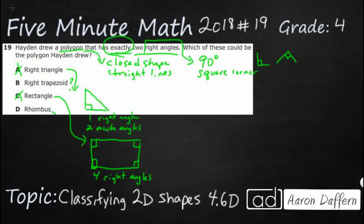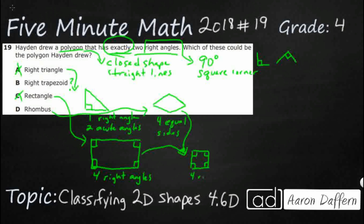Let's check our rhombus. Sometimes we'll call a rhombus a diamond, but that's not really a name. Think of the pattern blocks — you actually have two rhombuses in your pattern blocks. A rhombus has four equal sides — that's what makes a rhombus a rhombus. In this particular rhombus, you don't have any right angles. You can actually merge a rhombus and a rectangle: if you put together a shape that's got four equal sides and four right angles, you get a square. A square is a special type of rhombus and rectangle combined, but that's got four right angles — too many.